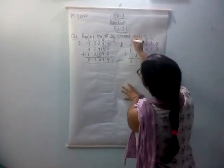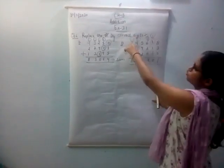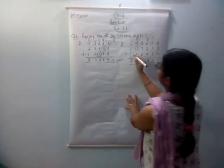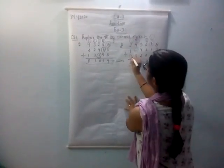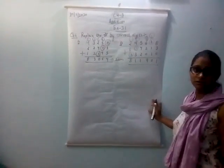Then 1 is over there. So 2 plus 1 is 4, plus 1 is 5, and plus 3 is 8.